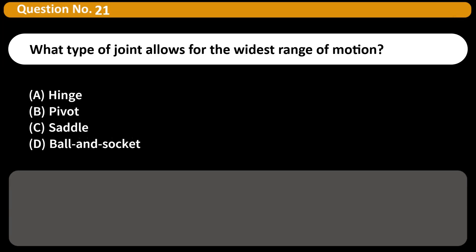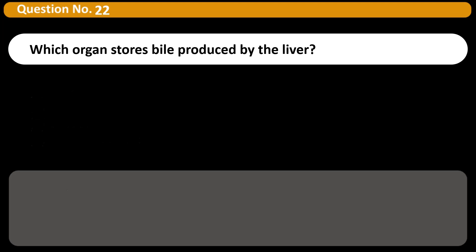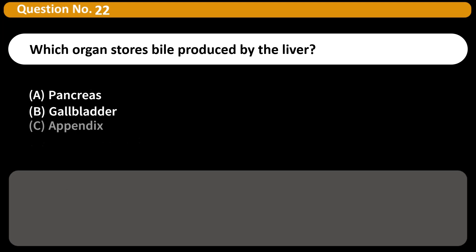What type of joint allows for the widest range of motion? A) Hinge, B) Pivot, C) Saddle, D) Ball and socket. Answer: D. Ball and socket joints (e.g., shoulder, hip) allow for rotational and multidirectional movement.